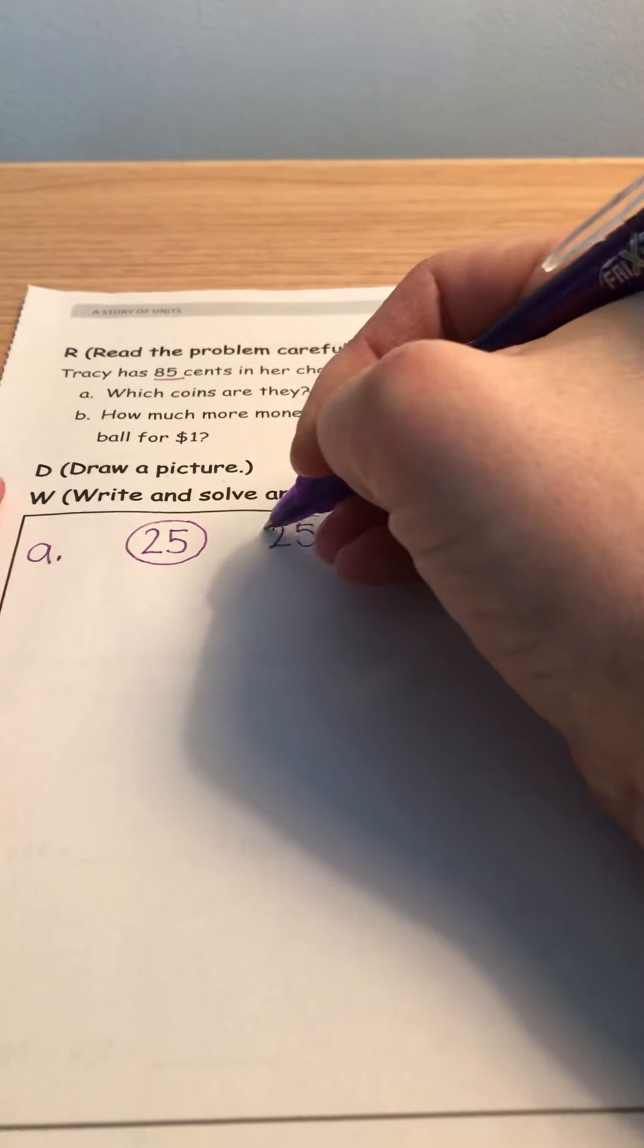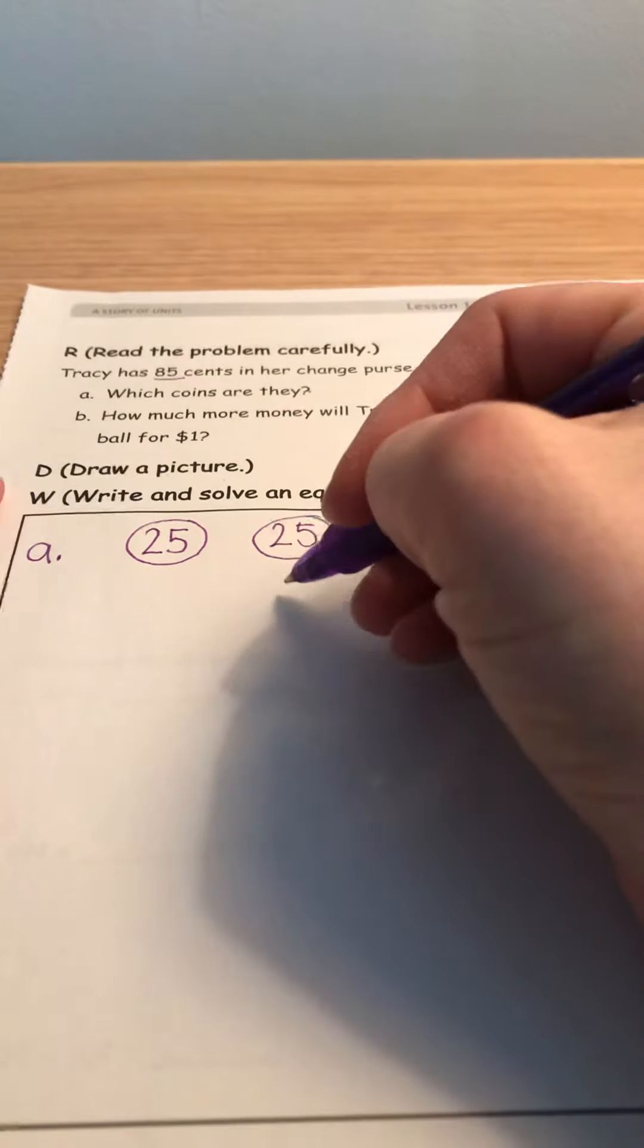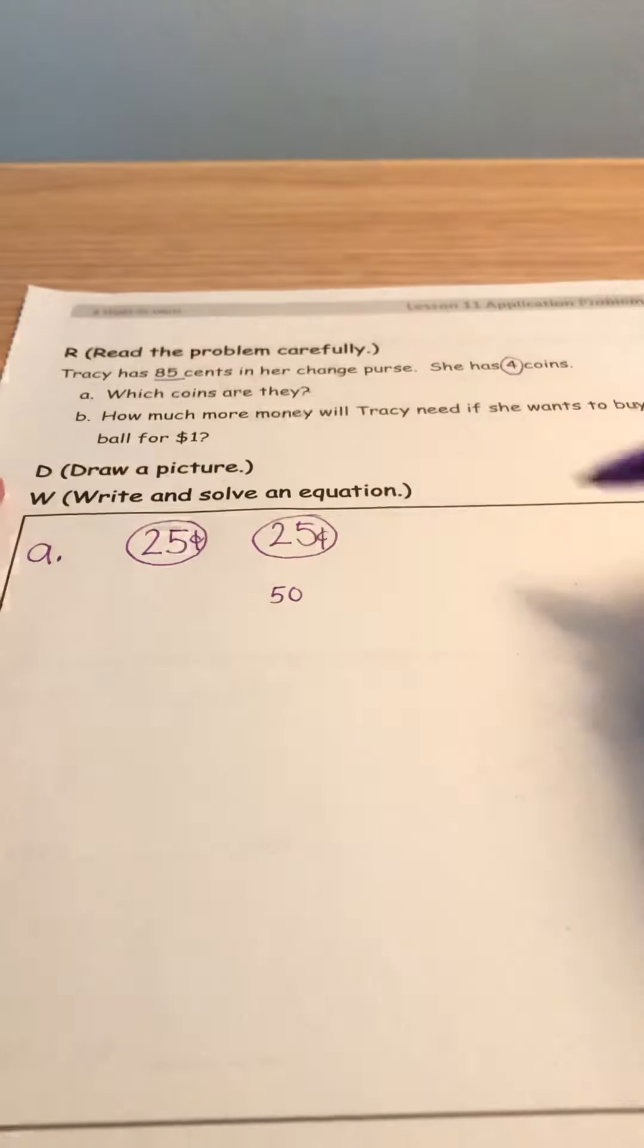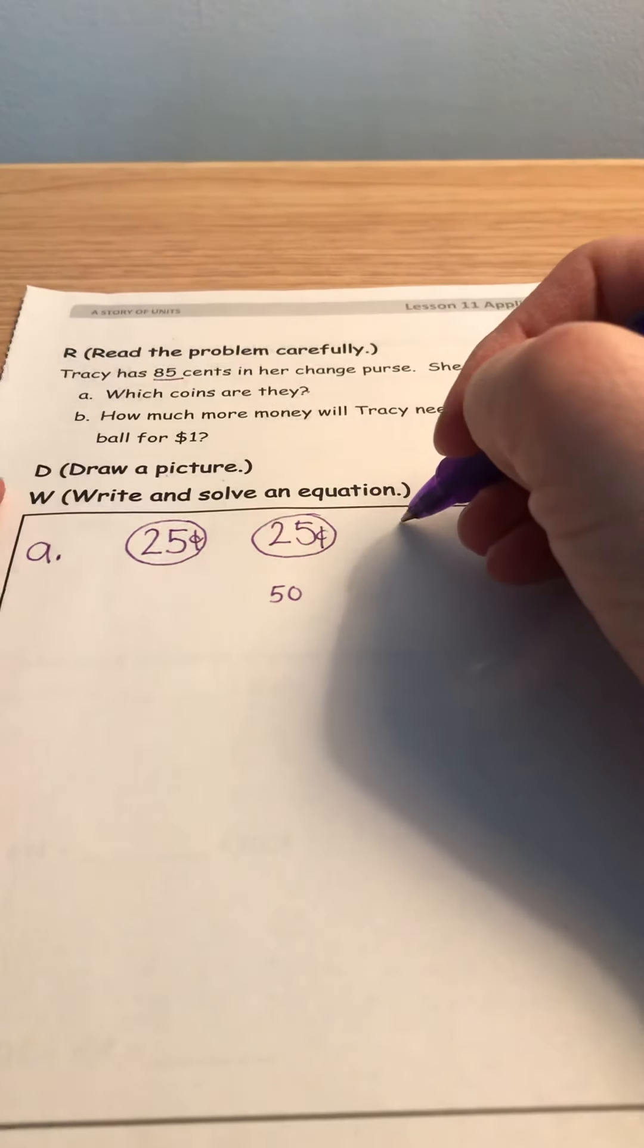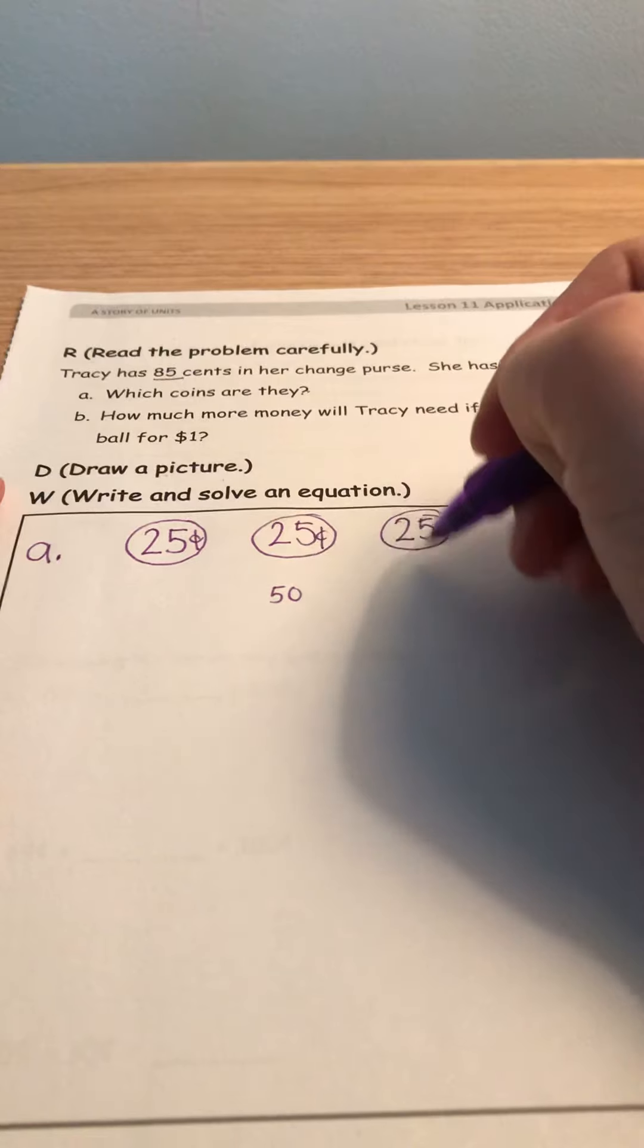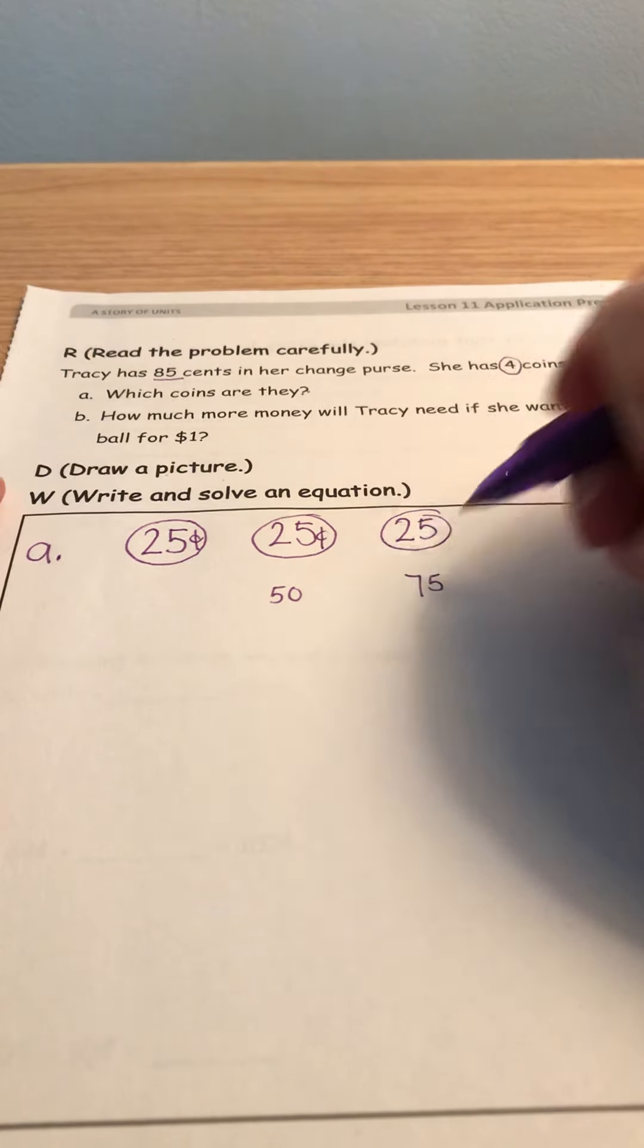how much is that going to be total value? 50 cents, right? So I have 25 cents and 25 cents, that's 50 cents. If I add a third quarter, that brings me to 75 cents.